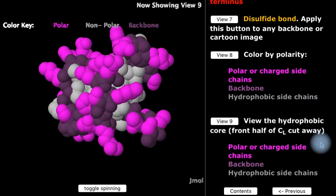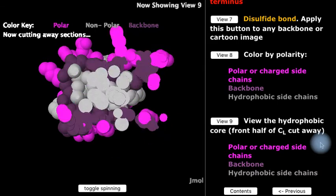Now we're going to cut away the front half of the molecule to see the inside. Nearly all water-soluble protein domains have a hydrophobic core, shown here in light gray.